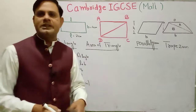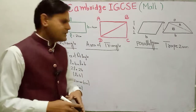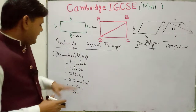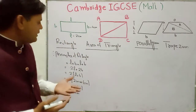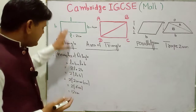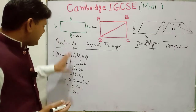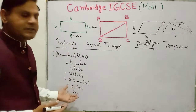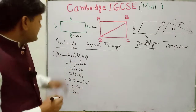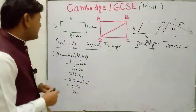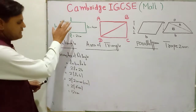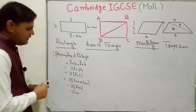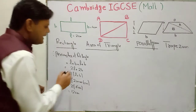Length can be measured in centimeters, kilometers, and so on. Area will be in centimeter squared. You can easily find the perimeter of a rectangle using this formula. Now if I say find the area of this rectangle, then the area is equal to: